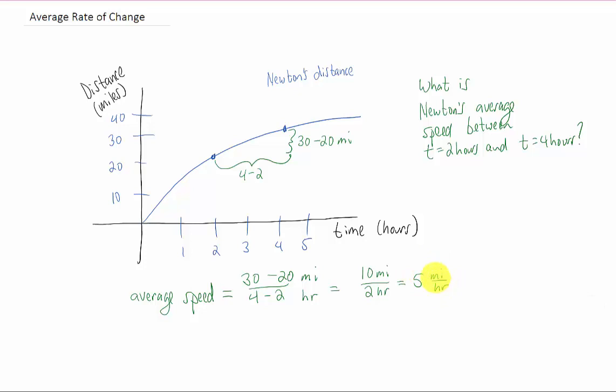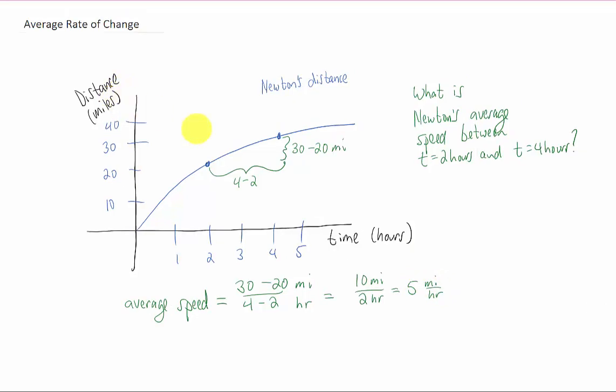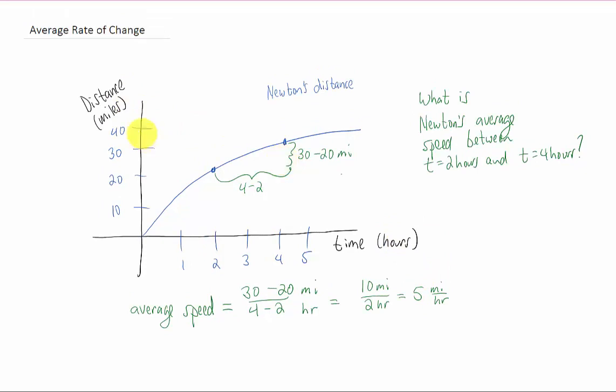Notice that the units turn out to be the y-axis units divided by the x-axis units. What we just did there was we found how fast Newton's distance was changing with respect to how fast time was changing. We call that a rate of change problem. We found Newton's rate of change on his bicycle.